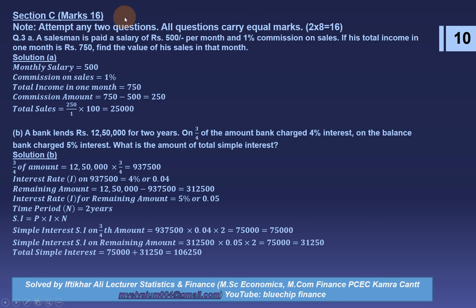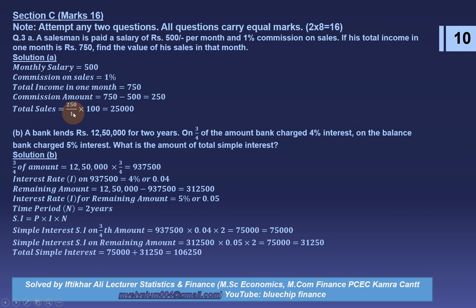Section C, Question 3 Part A: a salesman is paid a salary of rupees 500 per month and 1% commission on sales. If his total income in one month is rupees 750, find the value of his sales. Monthly salary is 500, so commission earned = 750 − 500 = 250. Since 250 is 1% of total sales, total sales = 250 × 100 = rupees 25,000.